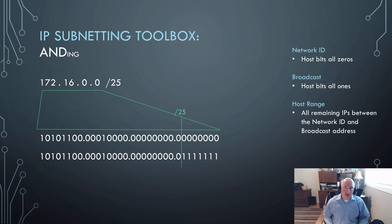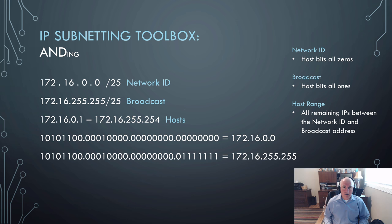So we're only manipulating the bits to the right of our line. And I can then write those out in decimal. And that's my network ID and my broadcast. And from that, I can go ahead and calculate my host range because it would begin one higher than the network ID and end one lower than the broadcast, as you see here.